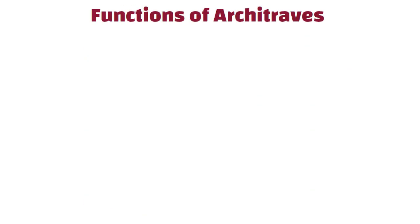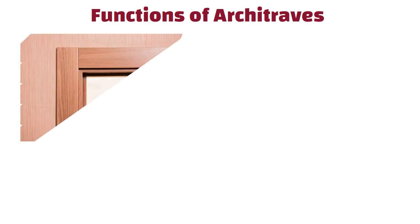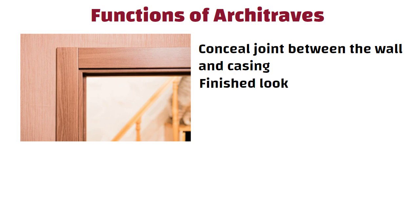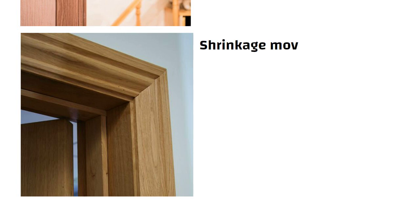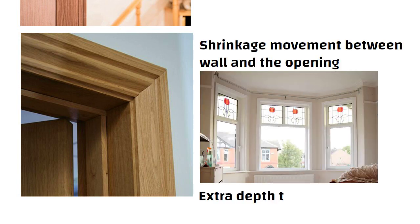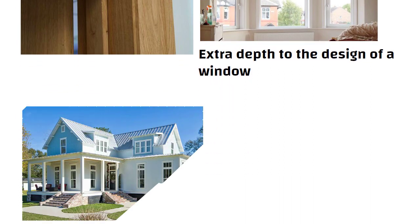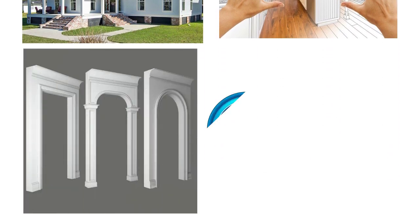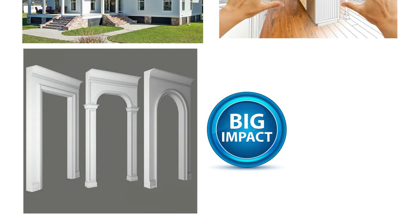Let us understand the functions of architraves. Architraves conceal the joint between the wall and casing within the door, giving them a finished look. They also allow for any possible shrinkage movement between the wall and the opening, and provide extra depth to the design of a window. Whether you are building a new home or renovating an existing one, an architrave is a small detail that can make a big impact on the overall design.